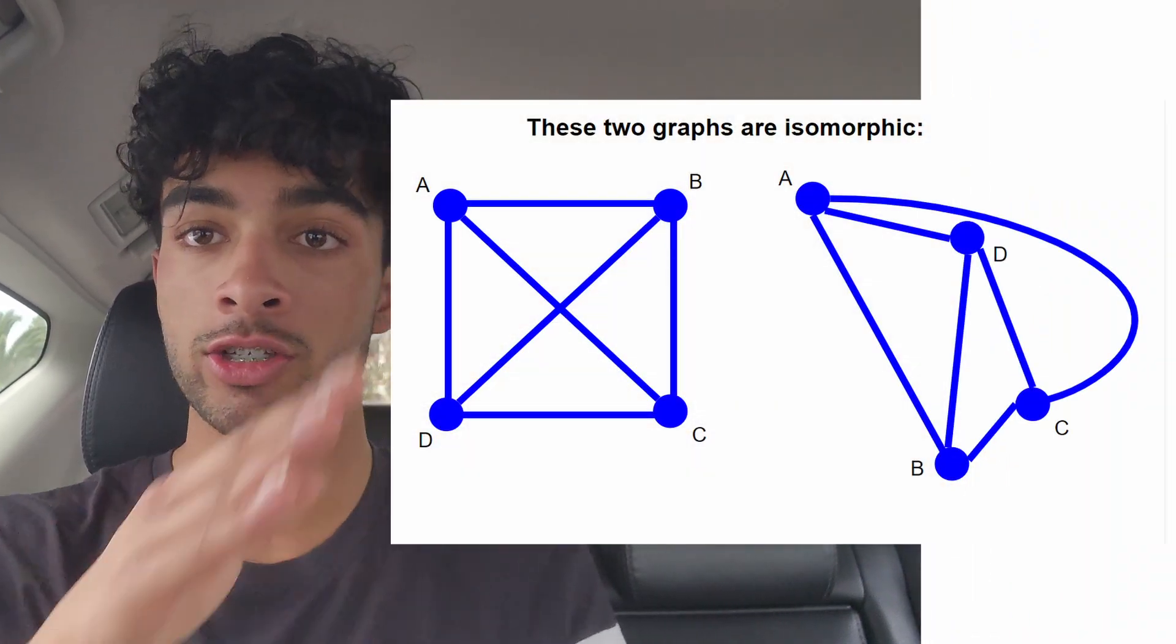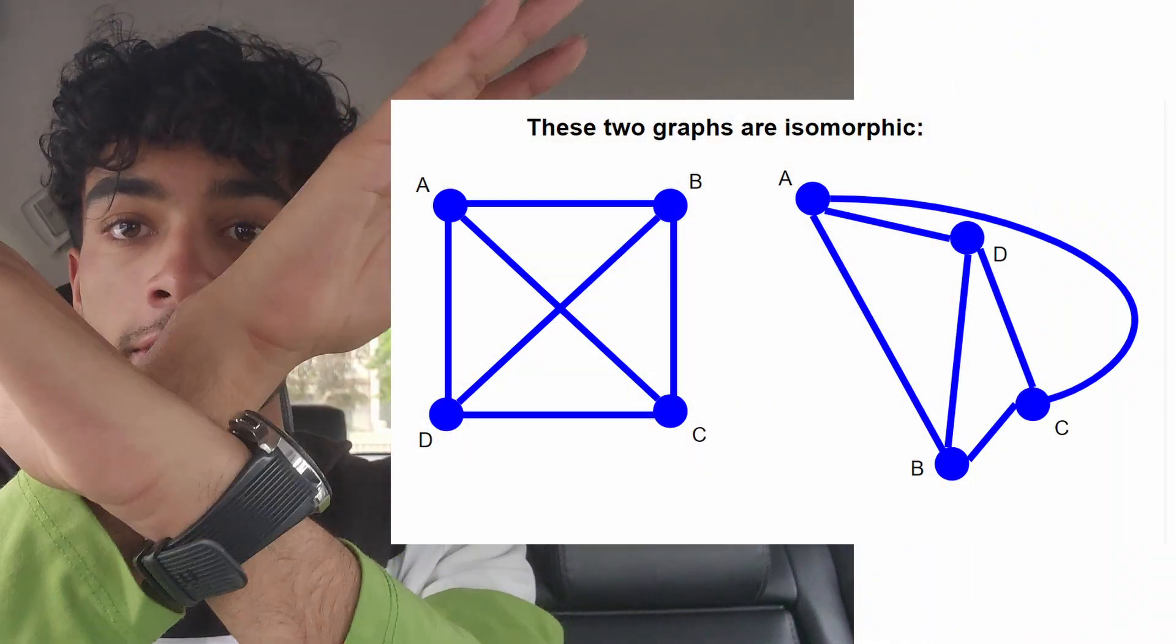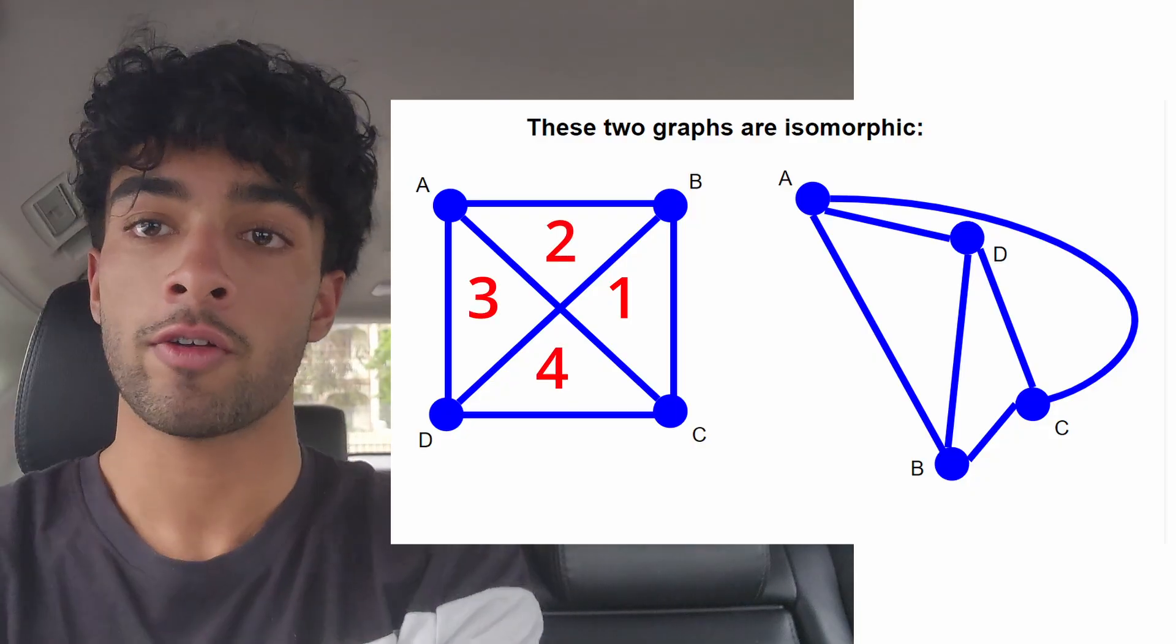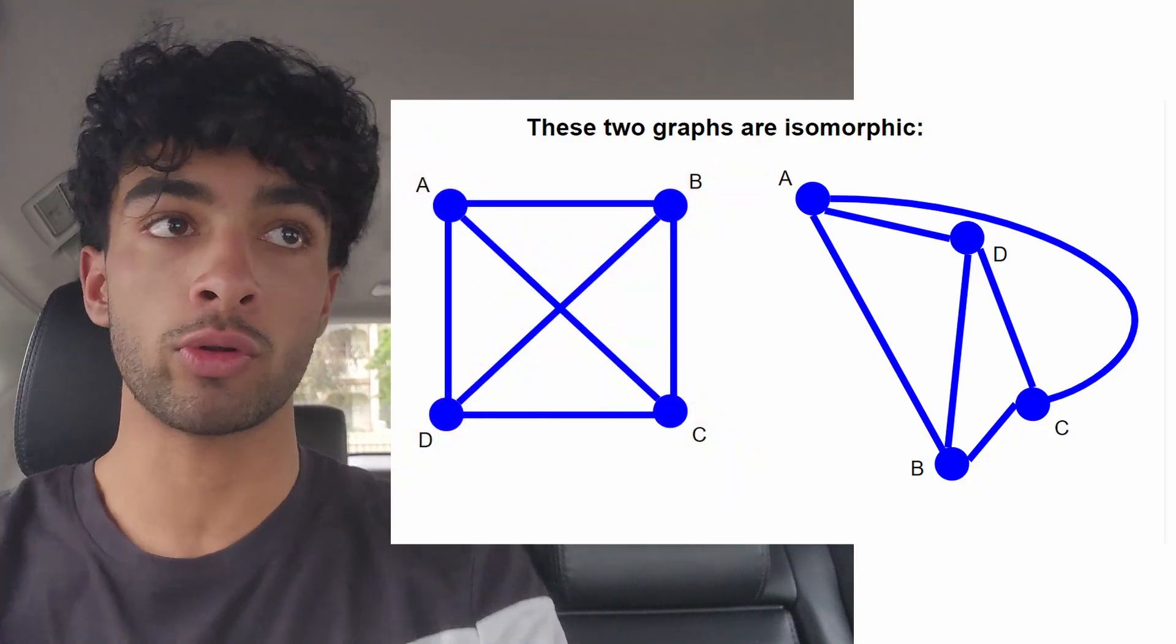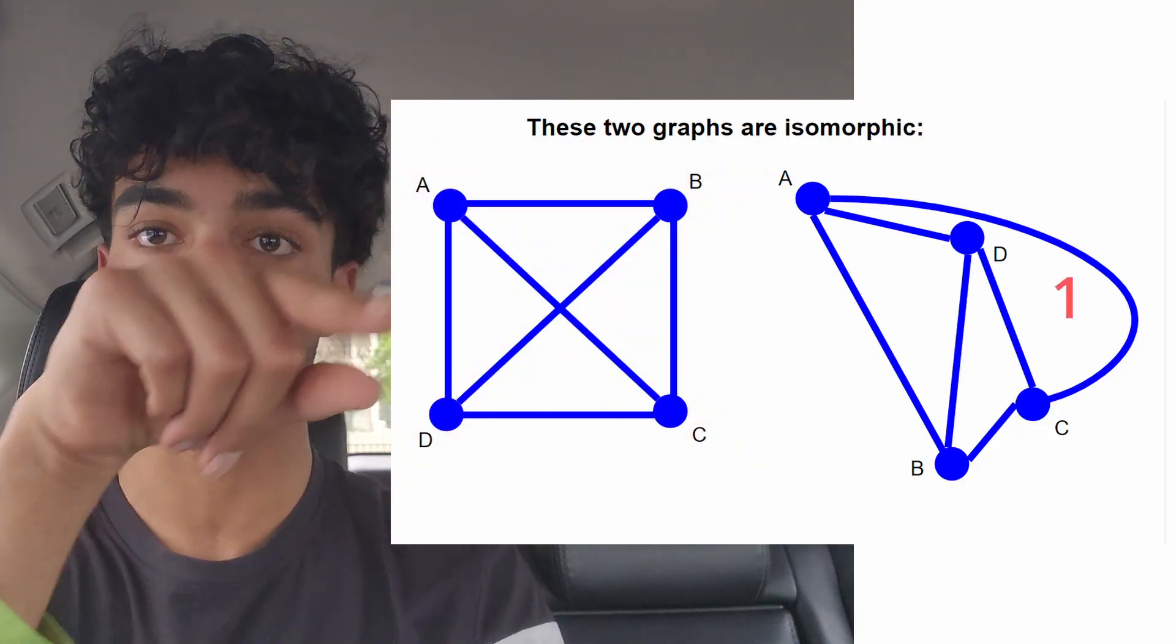For example, if it's a square that has an edge that crosses like this, this does not mean that there is one, two, three, four faces. When you uncross them, it will actually have only three: one, two, three.